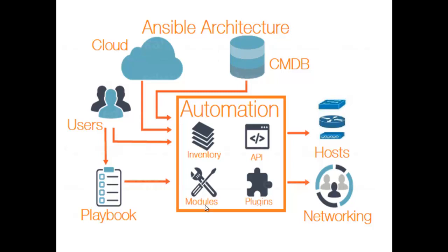Modules are executed directly on remote hosts through playbooks. Modules can control system resources like services, packages, or files, or execute system commands. They act on system files, install packages, or make API calls to service networks. There are over 450 Ansible-provided modules that automate nearly every part of your environment — for example, cloud modules like CloudFormation which creates or deletes an AWS CloudFormation stack, and database modules like MSSQL_DB which removes MySQL databases from remote hosts.